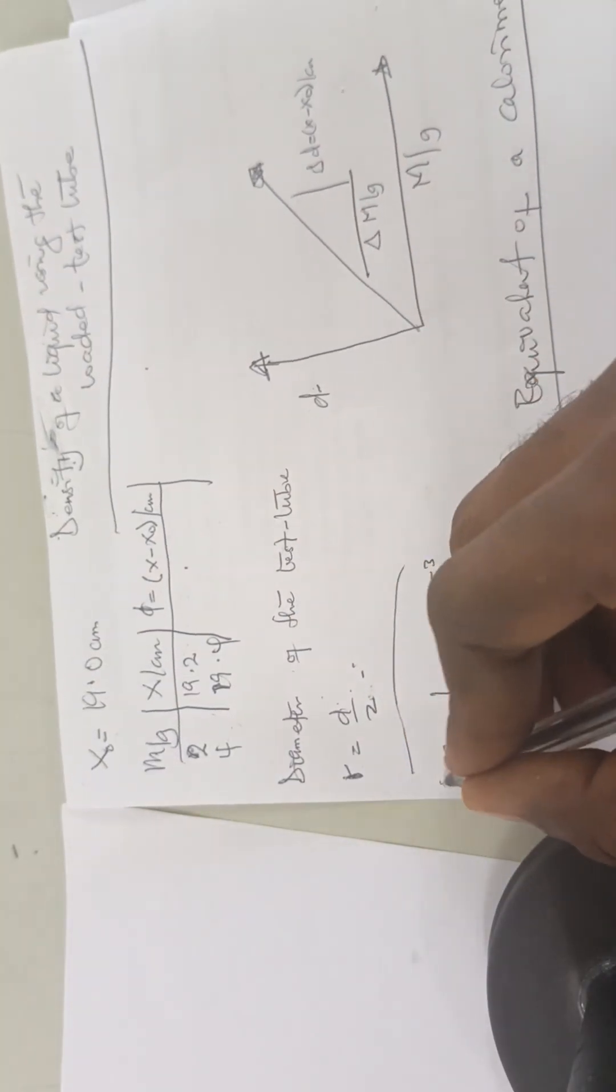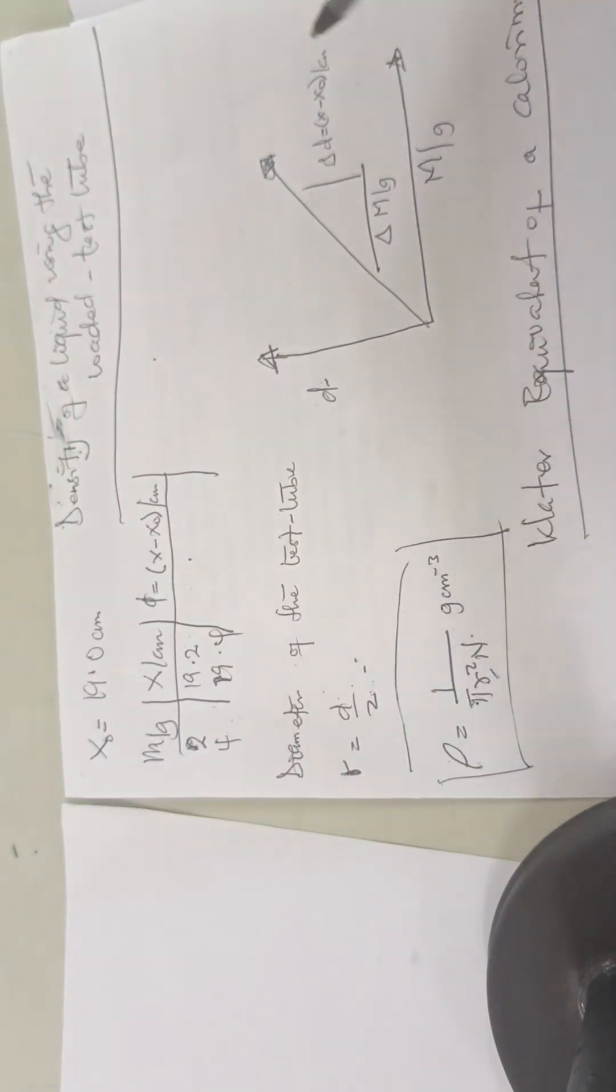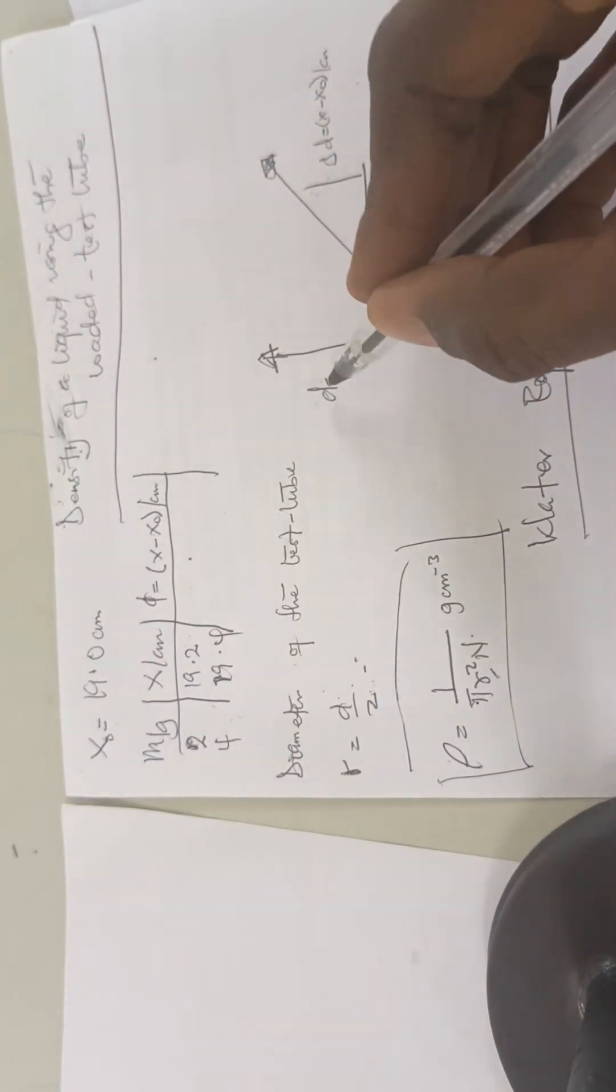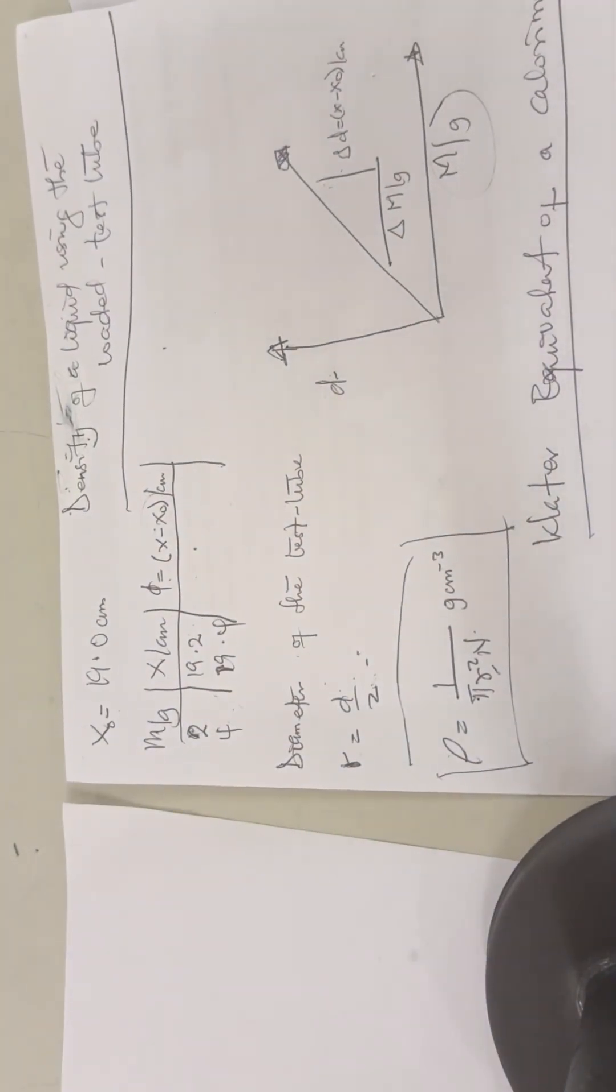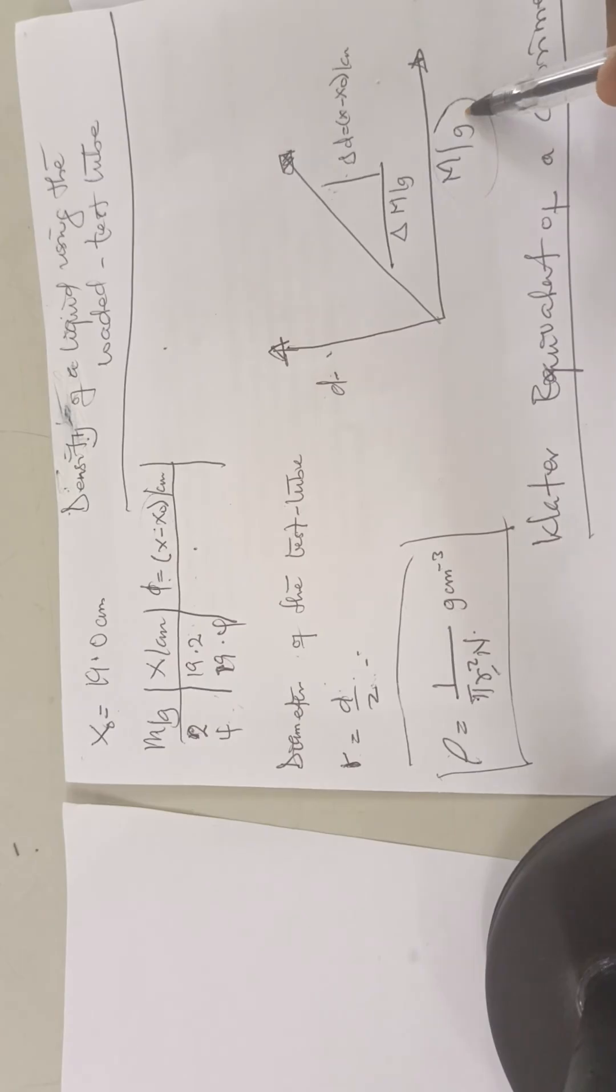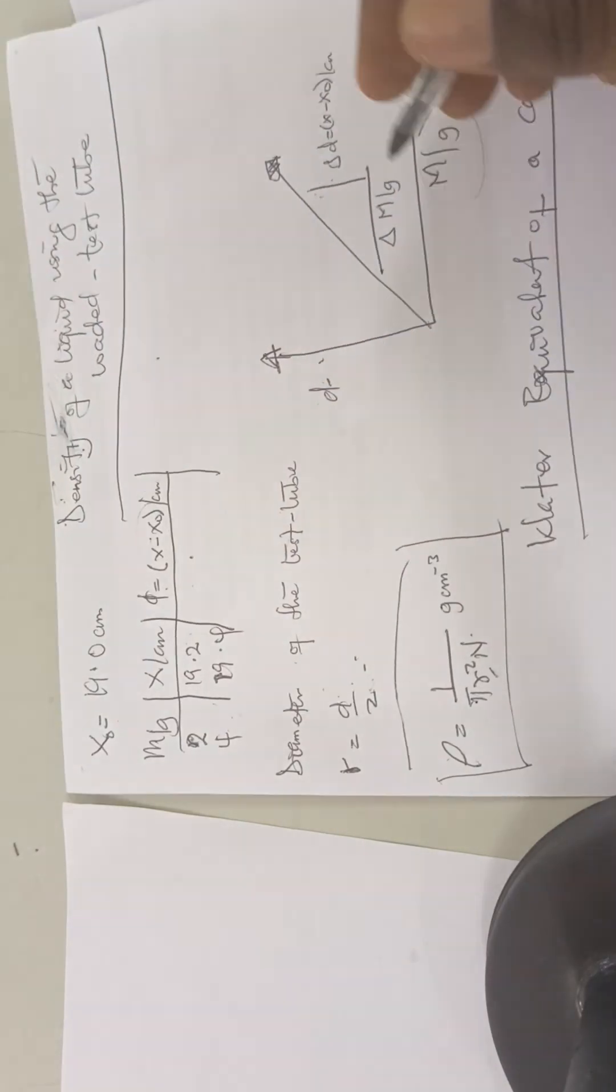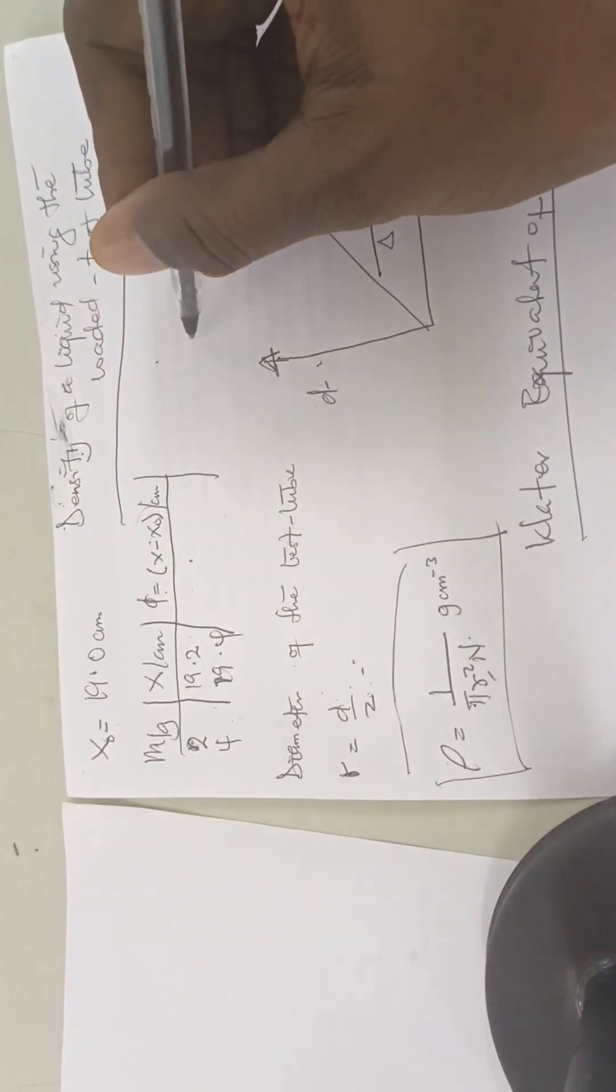This is the formula for finding the density. Now, after plotting our graph, we are supposed to plot d against the mass. We find the slope—the slope is supposed to be our n here.